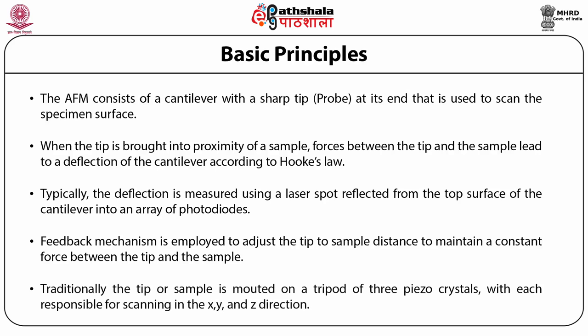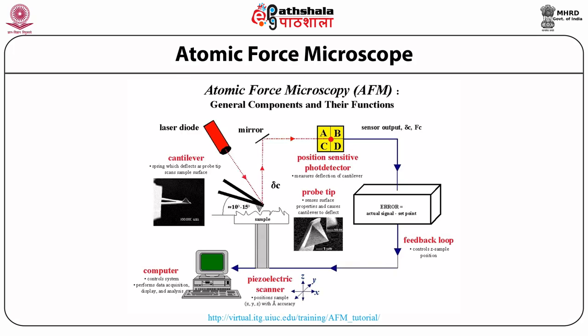Typically, the deflection is measured using a laser spot reflected from the top surface of the cantilever into an array of photodiodes. A feedback mechanism is employed to adjust the tip-to-sample distance to maintain a constant force between tip and sample. Traditionally, the tip or sample is mounted on a tripod of three piezo crystals, each responsible for scanning in the x, y, and z directions. This flow diagram shows the general components and their functions, all labeled appropriately.